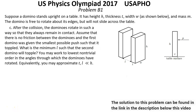Question C. After the collision, the dominoes rotate in such a way so that they always remain in contact. Assume that there is no friction between the dominoes and the first domino was given the smallest possible push such that it toppled. What is the minimum L such that the second domino will topple? You may work to lower non-trivial order in the angles through which the dominoes have rotated. Equivalently, you may approximate t and L much less than h.